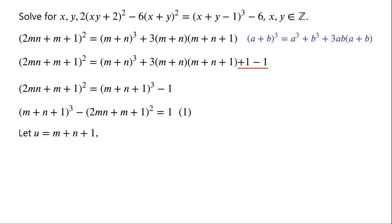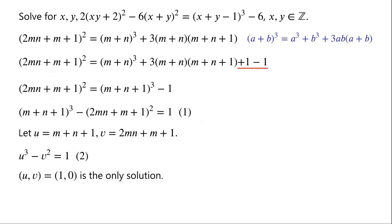We let u equal m plus n plus 1, and v equal 2mn plus m plus 1. Then the equation becomes u cubed minus v squared equals 1. This is a Mordell's equation. It is well known that this equation has only the trivial solution u equals 1 and v equals 0.